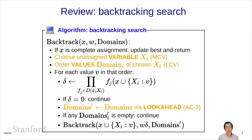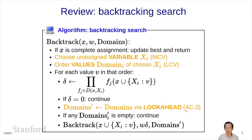Last time we talked about the heuristics for choosing an unassigned variable and ordering the values — these are the MCV and LCV heuristics. And then we looked at forward checking, which was a one-step look-ahead. Now we're going to upgrade that to AC3.